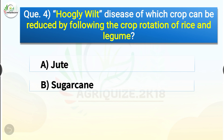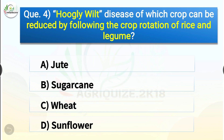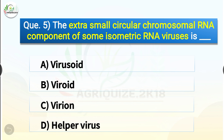Question number four: Hooghly wilt disease of which crop can be reduced by following the crop rotation of rice and legume? The options are jute, sugarcane, wheat, or sunflower. The correct answer is option A, jute. Hooghly wilt disease of jute can be reduced by following the crop rotation of rice and legume.